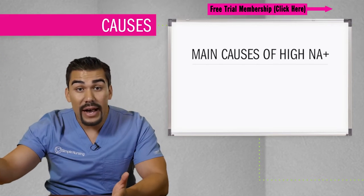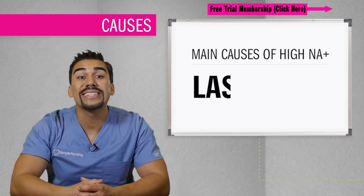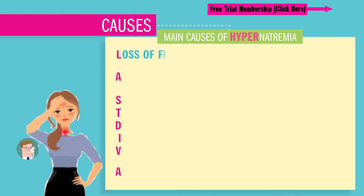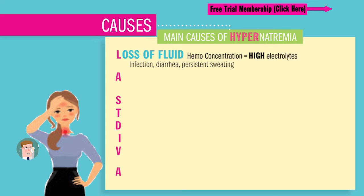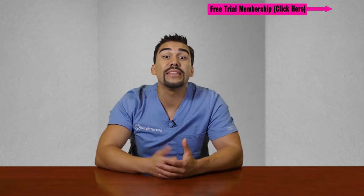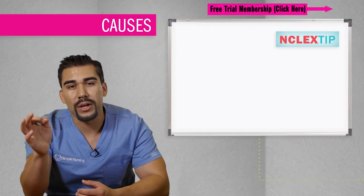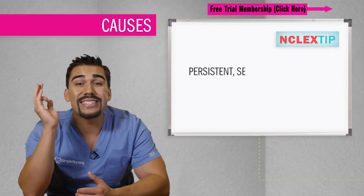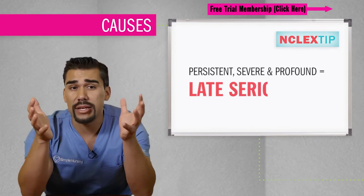Now the main causes that keep sodium high in the body and not in the potty — using our nifty acronym, the LAST DIVA. L is the loss of fluids, causing a thick concentrated blood known as hemoconcentration. Fancy words for dehydration from conditions like infection, diarrhea, heat exhaustion, or even a lot of diaphoresis — persistent sweating — where fluid loss is faster than sodium loss, hence sodium is concentrated and increased. NCLEX tip: words like persistent, severe, or profound are late and serious signs.